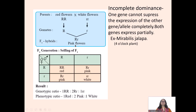For the F2 generation, selfing F1 pink flowers (Rr × Rr) gives: RR (red), Rr (pink), Rr (pink), and rr (white). The genotypic ratio is 1 RR (red) : 2 Rr (pink) : 1 rr (white), giving a phenotypic ratio of 1 red : 2 pink : 1 white, which is 1:2:1. In incomplete dominance, the genotypic ratio and phenotypic ratio are the same.